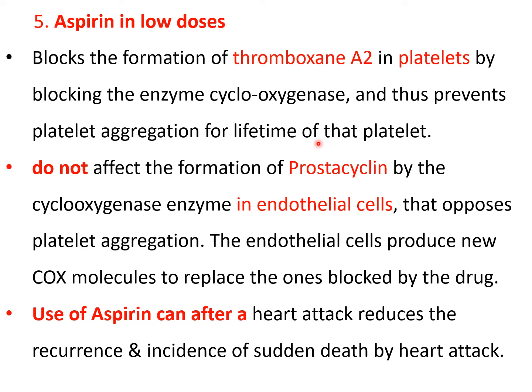Aspirin irreversibly blocks cyclooxygenase for the lifetime of that platelet, which is 10 days. So thromboxane A2 cannot be produced in those platelets. New platelets will not have cyclooxygenase inhibited, but aspirin in low doses does not affect the formation of prostacyclin by endothelial cells. Endothelial cells use cyclooxygenase to produce prostacyclin, while platelets use cyclooxygenase to produce thromboxane A2. Low doses of aspirin block platelet cyclooxygenase.